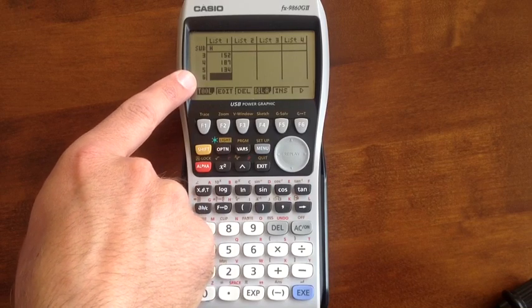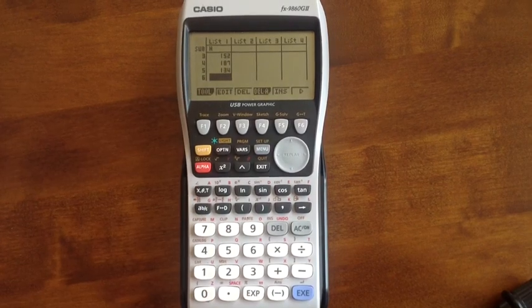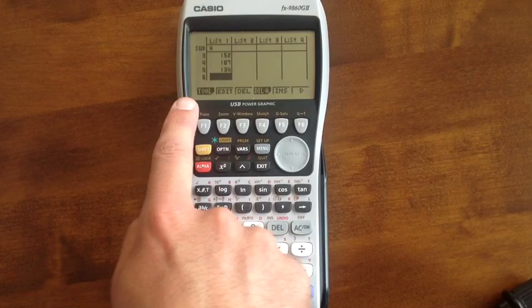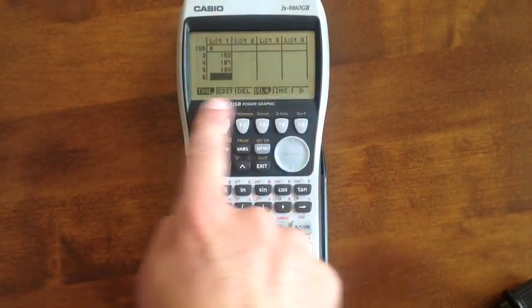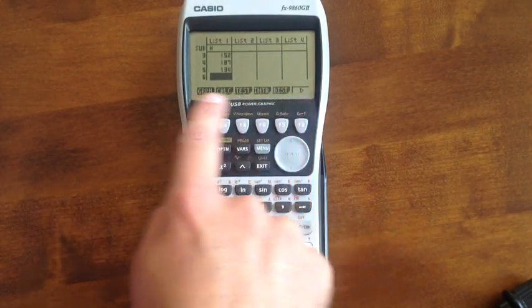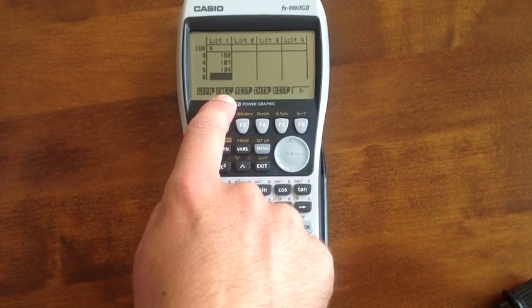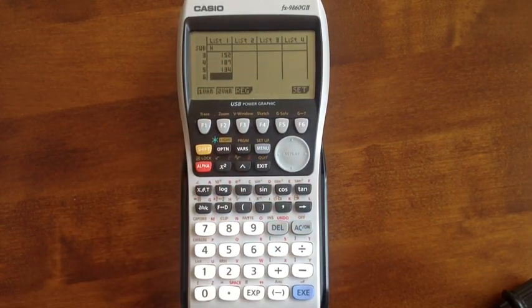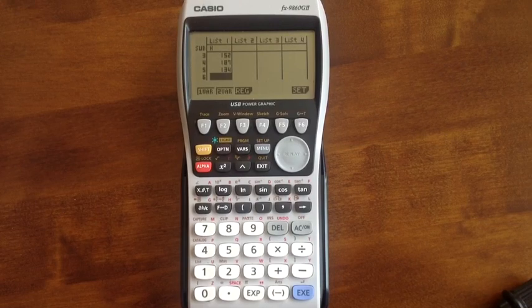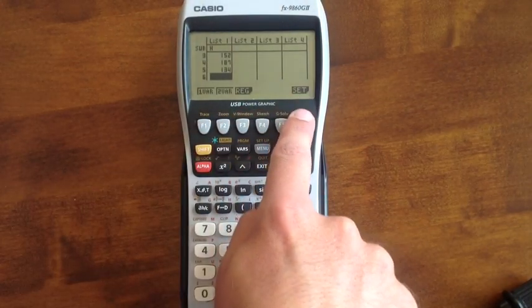We've now got all of our data into that. Maybe we want to do some calculations with this data. Looking at the different modes that we've got across the bottom, coming back to our original one, Calc for calculation, this is where we're going to do most of our work. So pressing that, we then need to tell the calculator what we're doing. I would always advise going into the settings first of all.